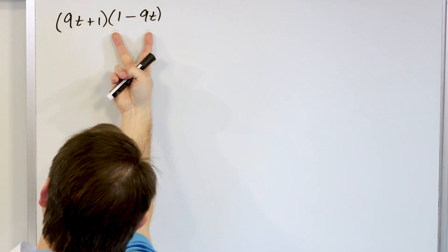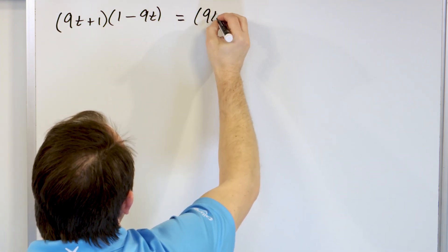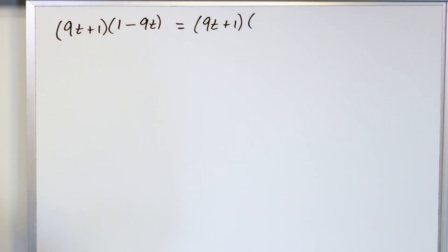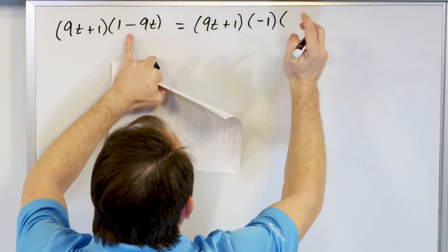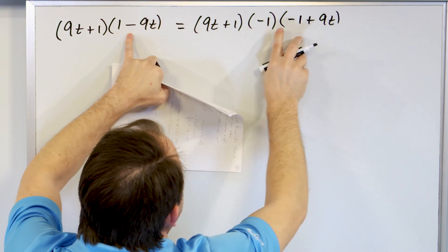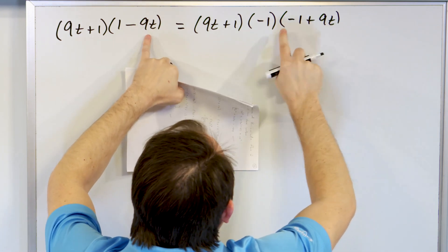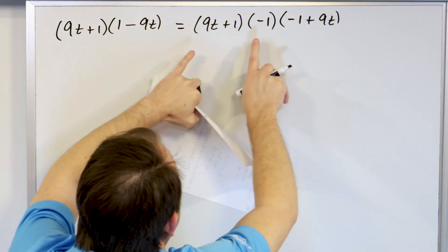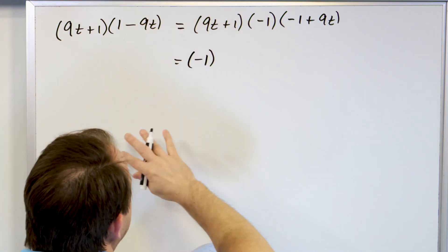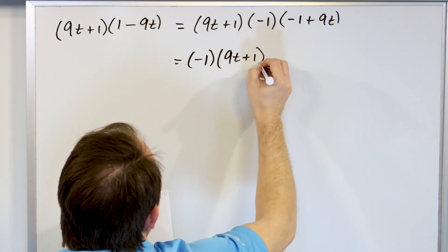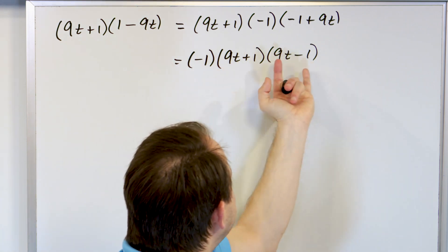So what we want to do is factor out a -1 from (1 - 9t) to flip it around and make it match the correct form. If I factor out -1, I get -1(-1 + 9t), which equals -1(9t - 1). I can put that -1 out in front of everything because it's all multiplied together. Then I have (9t + 1)(9t - 1), which now matches the (a + b)(a - b) form exactly.